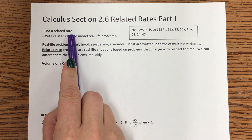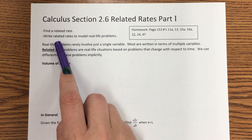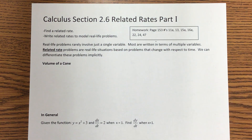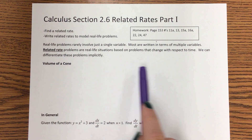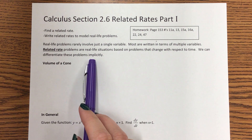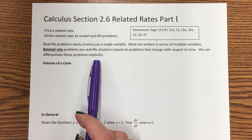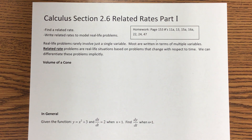What the heck is a related rate? We want to write related rates to model real life problems. Real life problems rarely involve just a single variable — usually there are several different variables. A related rates problem is a real life situation based on problems that change with respect to time. We can use derivatives, specifically implicit differentiation, because it's either difficult to isolate one variable or we just don't feel like it.